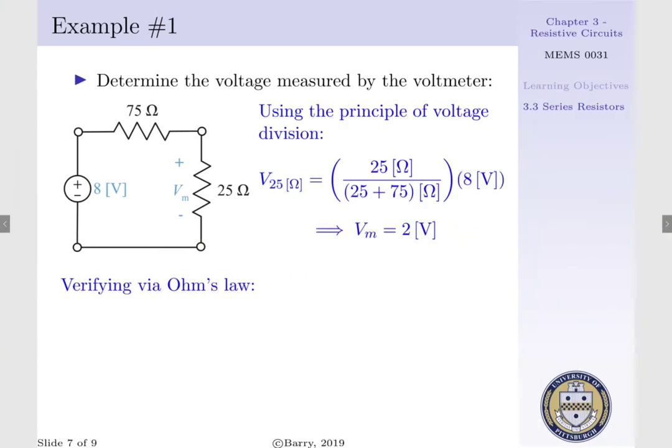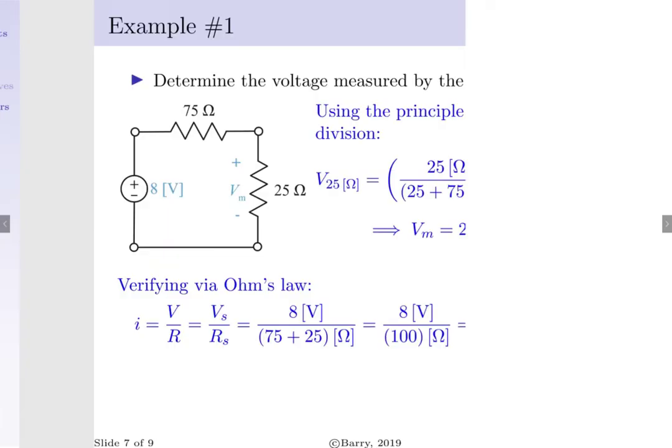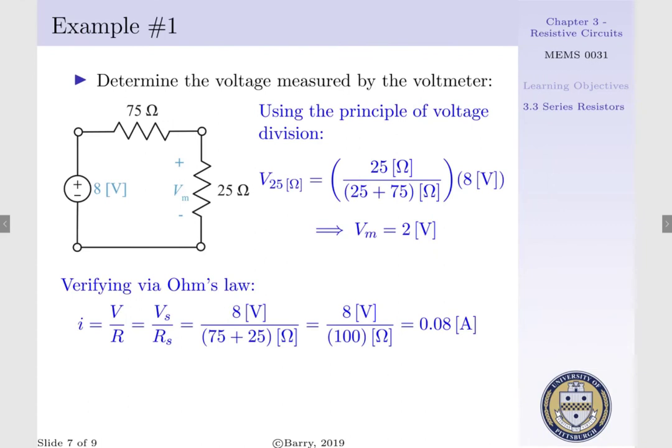We can verify this using Ohm's law, recalling for a circuit connected in a series configuration that our current I is the same value flowing throughout. Thus we can express Ohm's law in terms of our current which is equal to source voltage per our series resistance, where our source voltage is equal to 8 volts and our series resistance is 75 plus 25 ohms or 100 ohms.